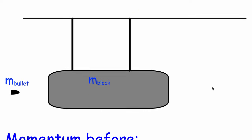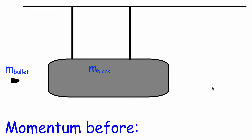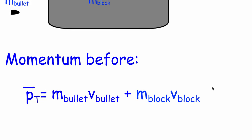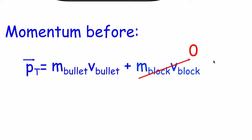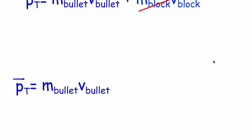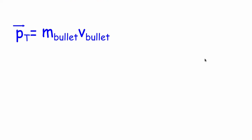For momentum before the system — what I like to do is just list everything. Total momentum of the system is the mass of the bullet times the speed of the bullet, plus the mass of the block times the speed of the block. Now obviously if the block is not initially moving, that term will be zero, which means we can simplify total momentum before the interaction to simply the mass of the bullet times the speed of the bullet. And obviously we don't know the speed of the bullet — that's what we're going to be looking for.